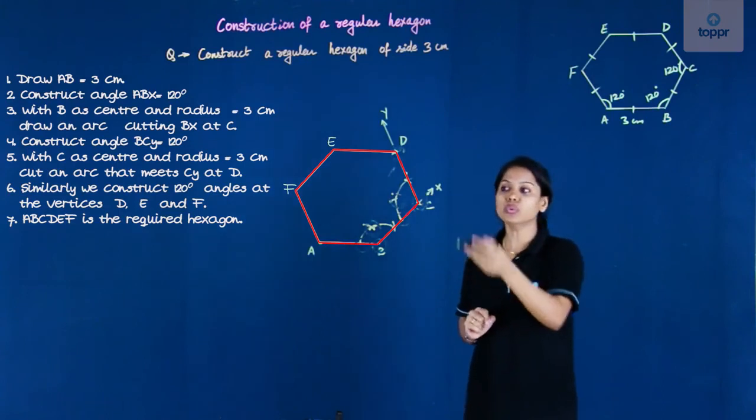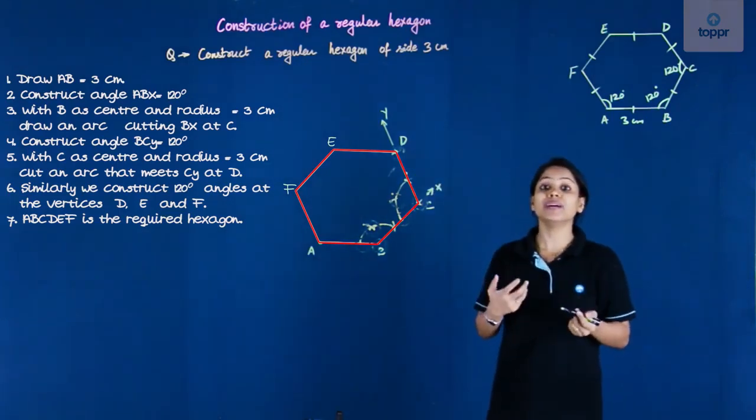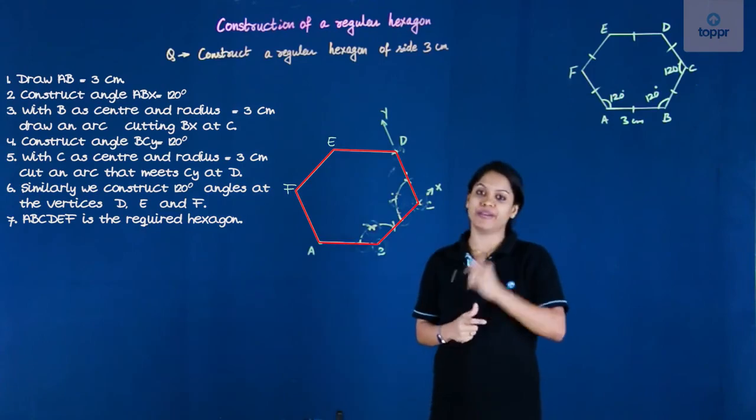We continue in the same manner to get the next vertex E and then the next vertex F. After you get F, all we need to do is join all of it to get our regular hexagon ABCDEF.